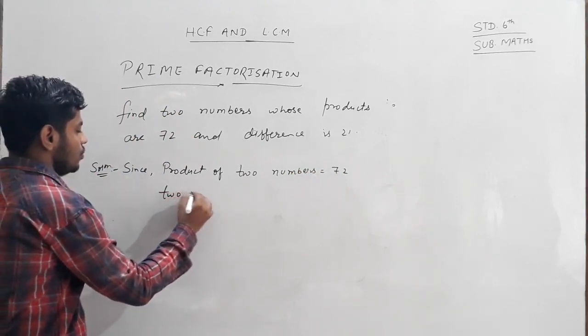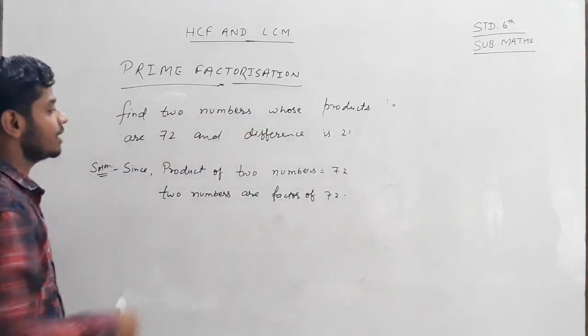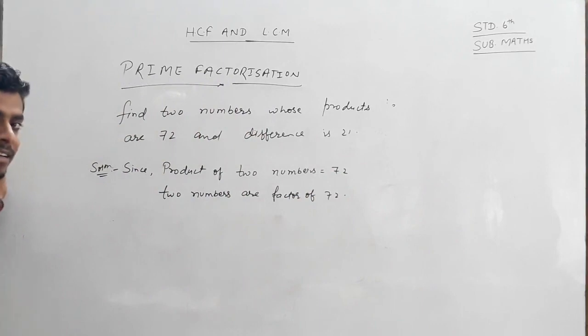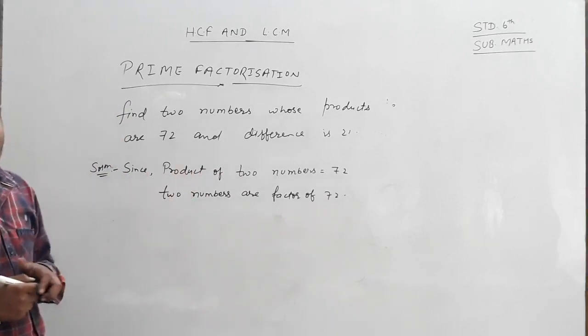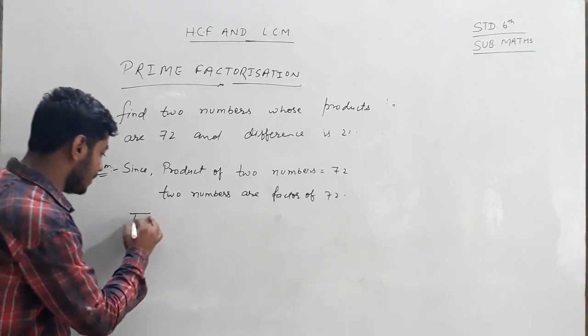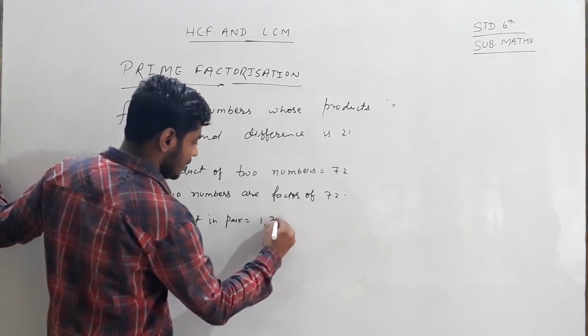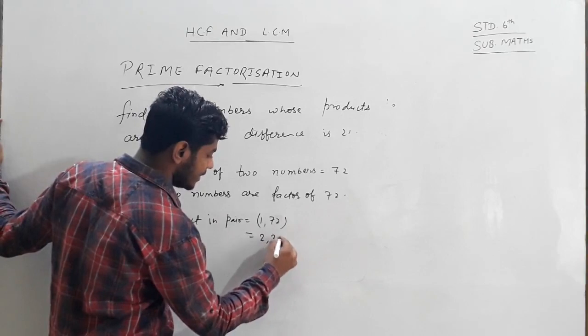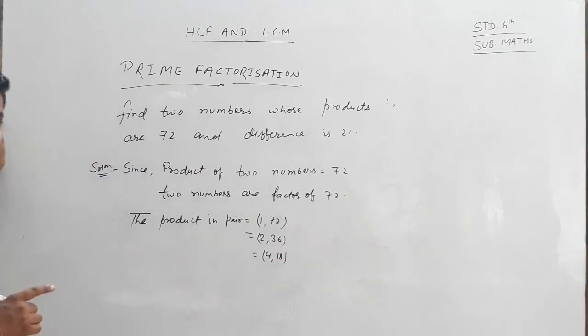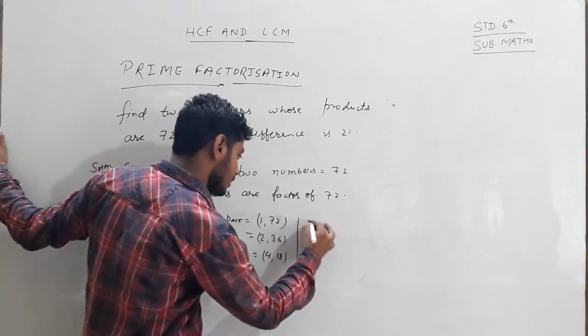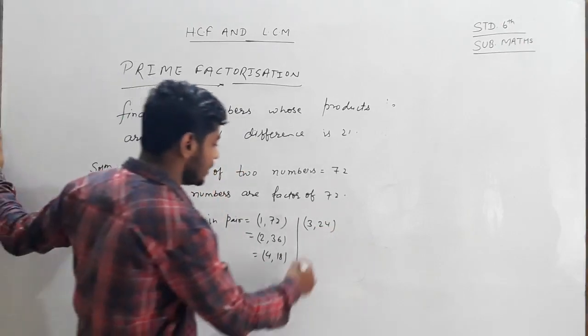The product pairs can be 1 and 72, 2 and 36, 4 and 18, 3 and 24, 6 and 12.